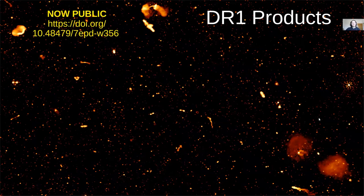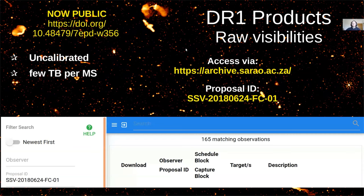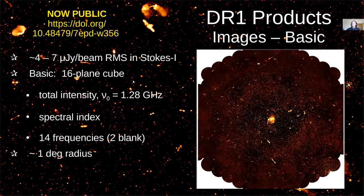The main point of the MGCLS is that it is a legacy program: data products are now public, accessible via DOI or the project website. Products include raw (uncalibrated) visibilities available through the SARAO archive under the same proposal ID. For those who want to go straight to science, image products are provided: basic full-field-of-view images (about one square degree), central noise of 4–7 micro-Jansky per beam, delivered as a 16-plane cube with total intensity, spectral index, and 14 frequency planes. Around bright sources, some direction-dependent artifacts remain since direction-dependent calibration has not been applied.